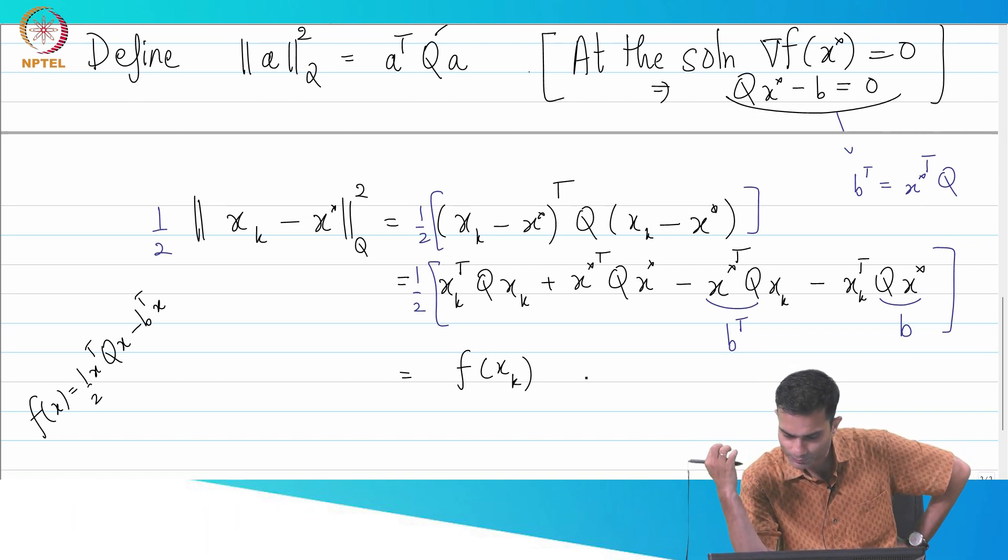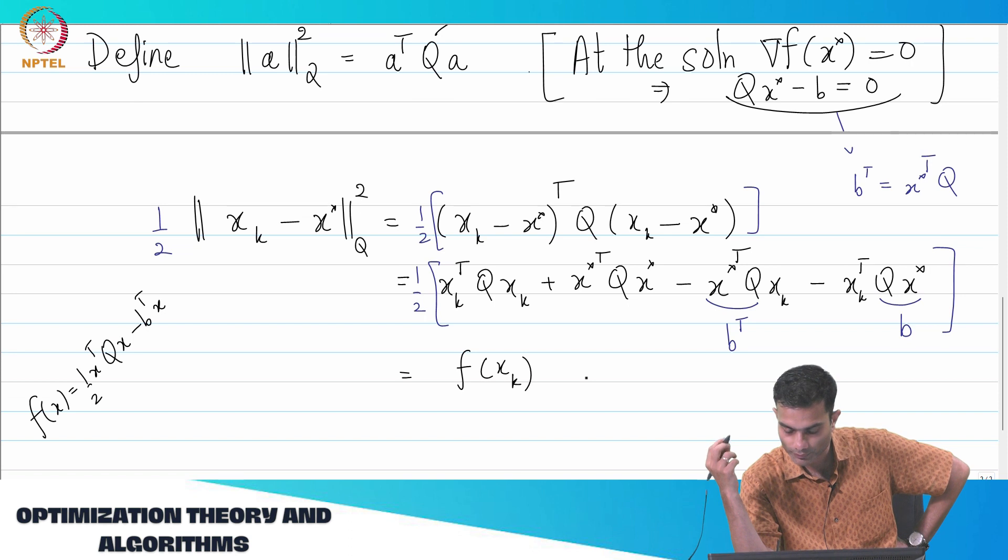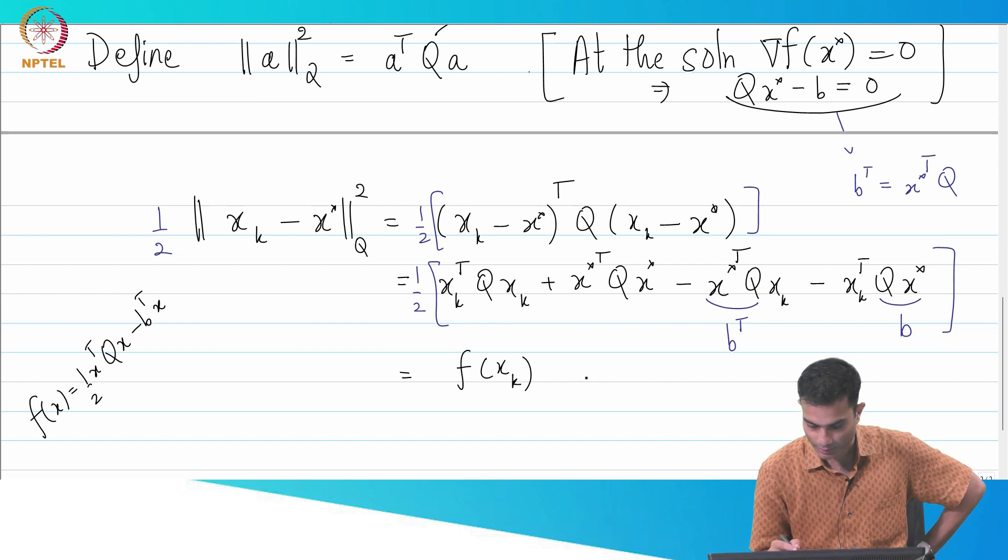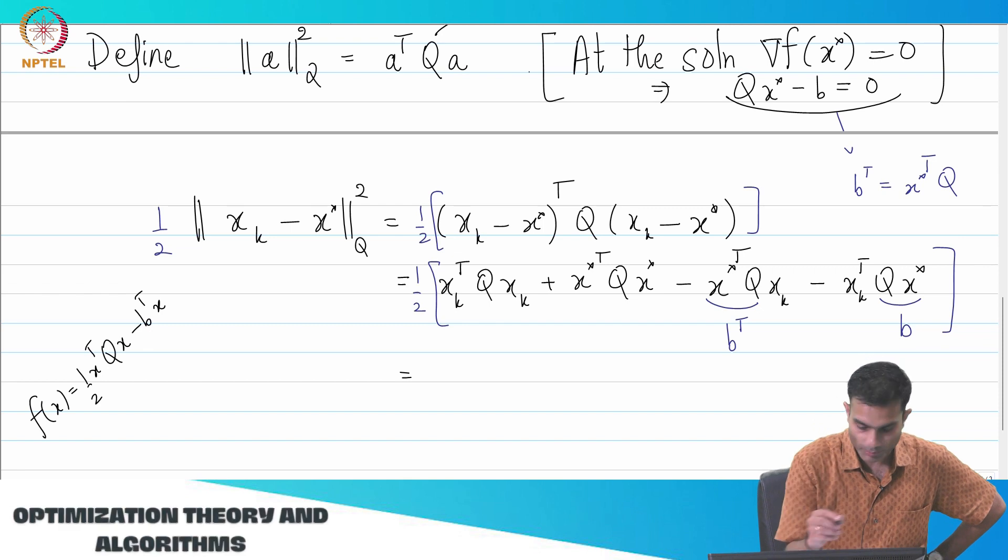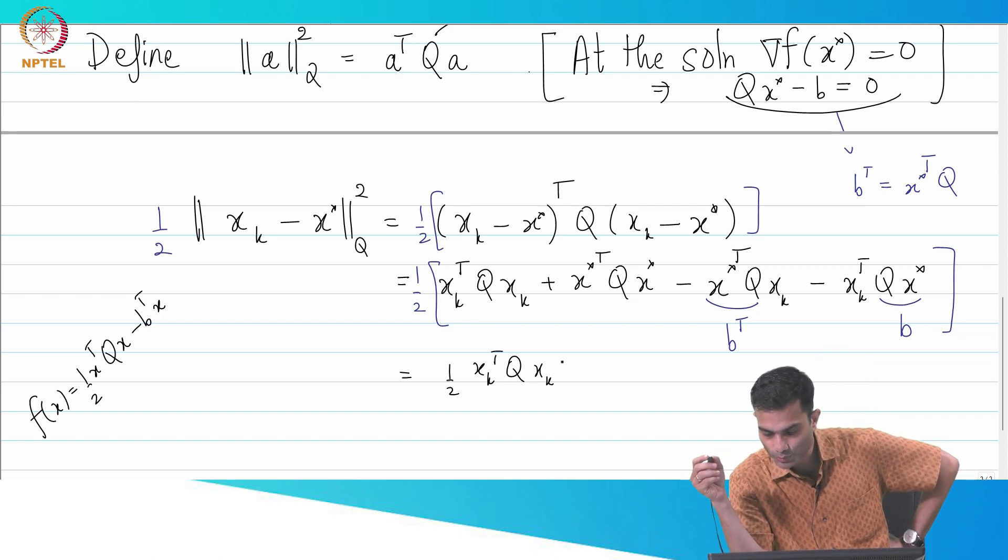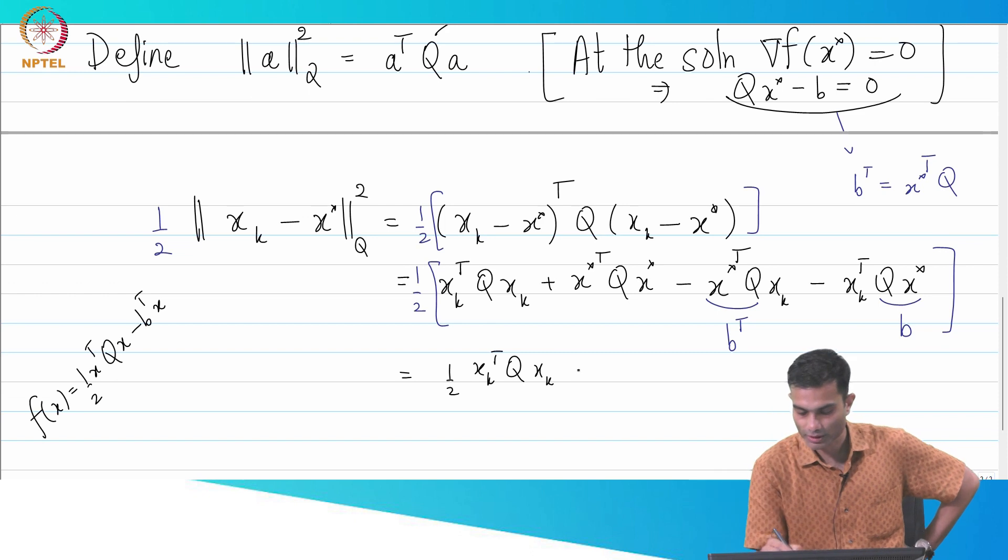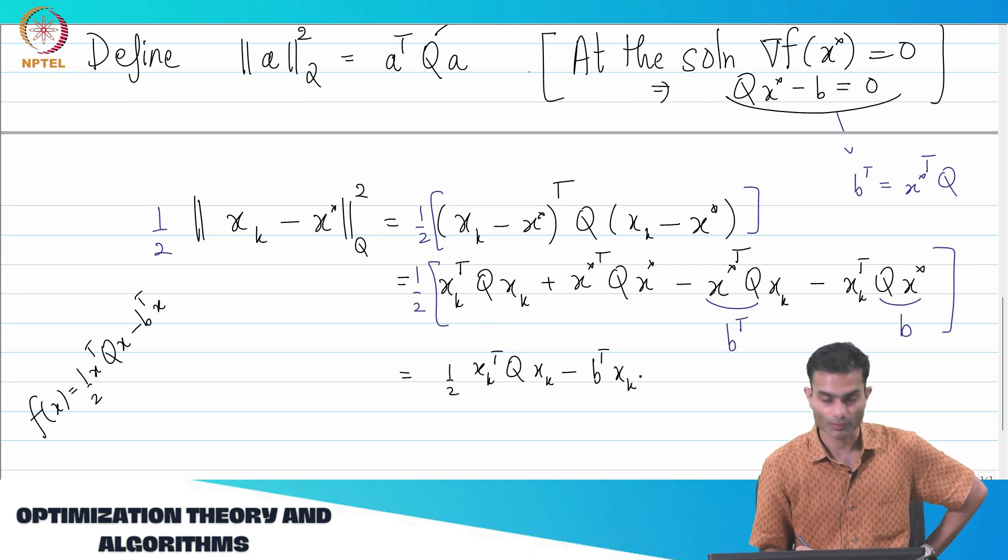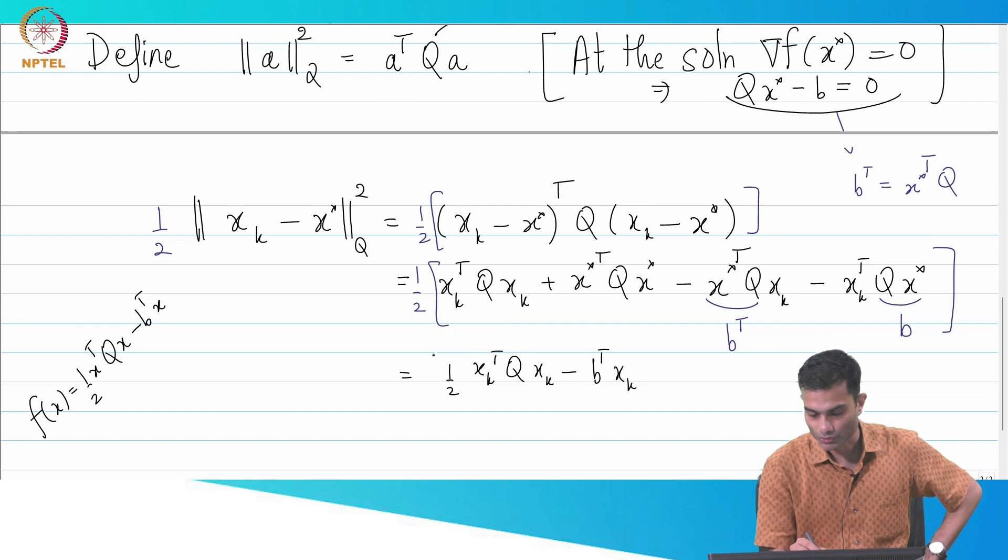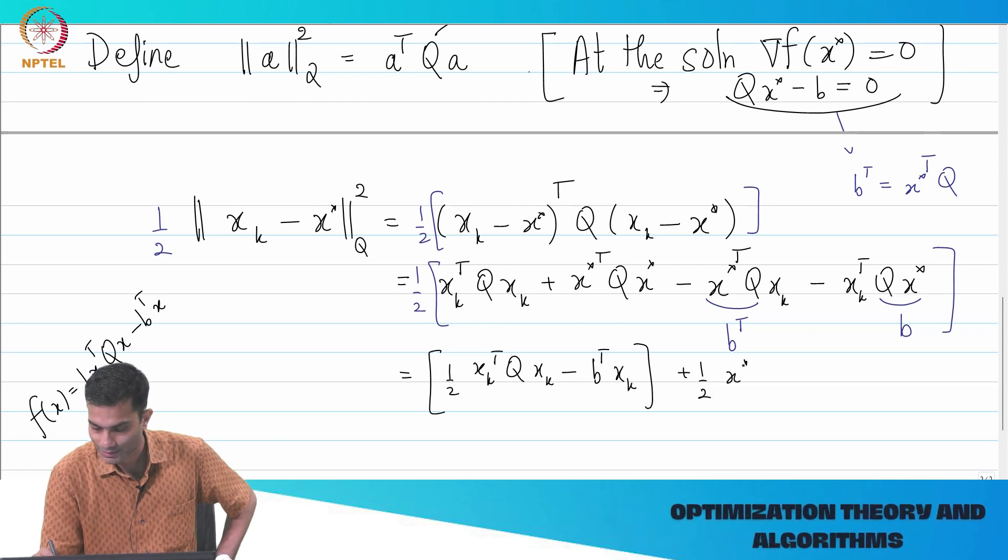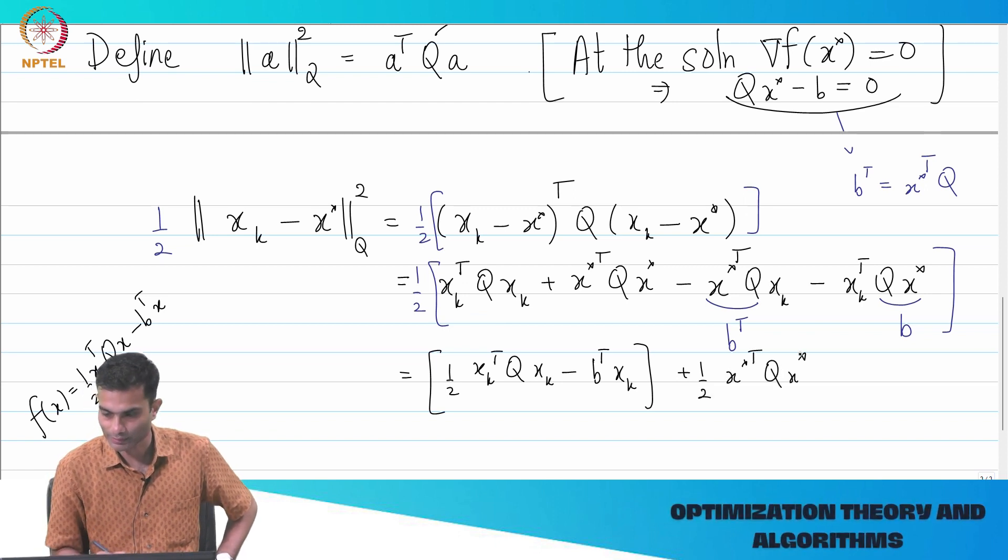Have we made a mistake in algebra somewhere? Half is not for the b's coefficient. So let's get this out. So let's write this down properly. So I am going to get half of x_k transpose Q x_k and b transpose x_k and this is going to give me minus b transpose x_k. This is what I have got. So, this is, and what is left plus half x star Q x star. So, what is left.